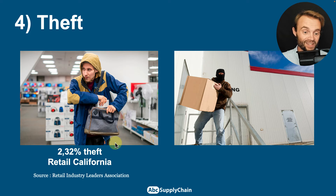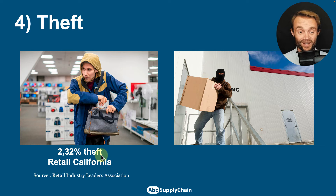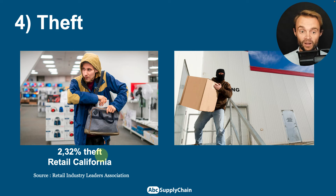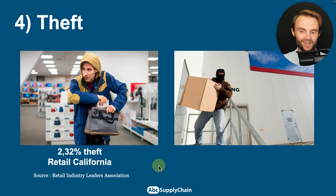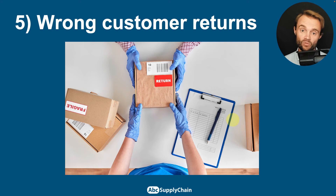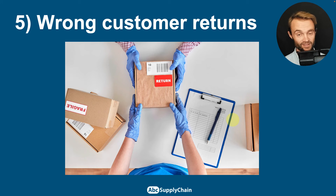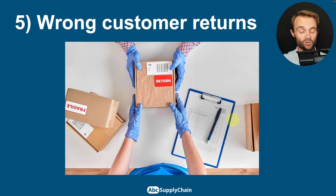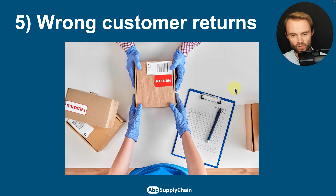Number four is theft. Yes, products get stolen. For example, for the retail industry in California we have 2.32% of theft, which is a lot. Products also disappear in warehouses and factories, so be careful. Number five is wrong customer returns. The return process is often a mess and not a priority for many companies. Most of the time you end up with the wrong code or the wrong label on the returned product — it's a very difficult process to master, but it has a huge impact on the quality of your inventory.